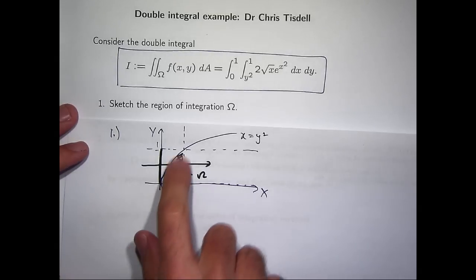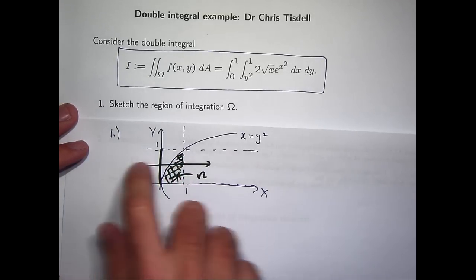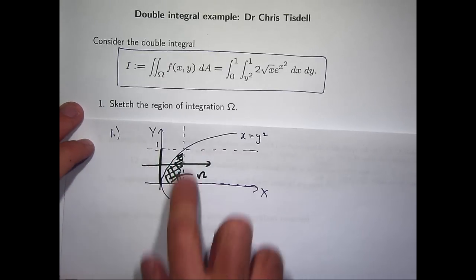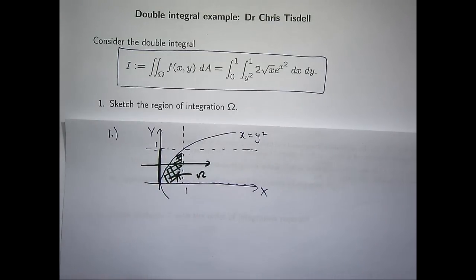So you can see here that this shaded region, if I move it up and down the y-axis between 0 and 1, I'll trace out this entire shaded region. So that's a sketch of the region of integration. Essentially, what I like to do is just sketch the boundaries or the edges of the region and then choose the region appropriately.